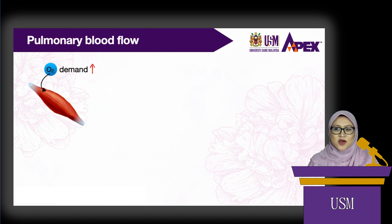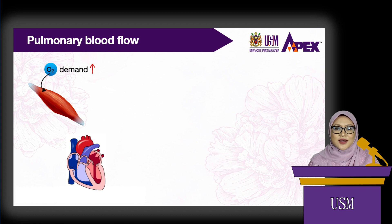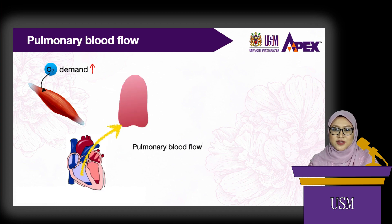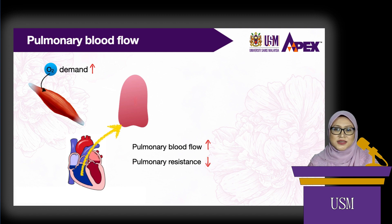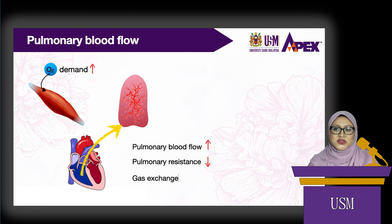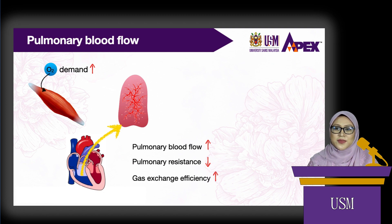To meet the increased oxygen demand, cardiac output increases. The cardiac output from the right heart increases the pulmonary blood flow. There is a decrease in pulmonary resistance and more pulmonary capillary beds are perfused, which also improves the efficiency of gas exchange. As a result, pulmonary blood flow becomes more evenly distributed throughout the lungs.